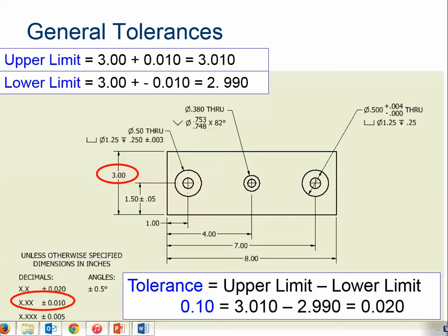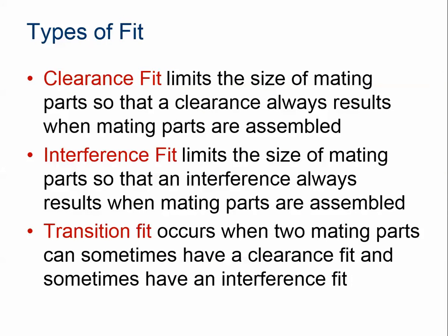Welcome to part two of the video on this tolerance presentation. We are now on the slide we left off on in part one, just about general tolerances and how to interpret what the tolerance would be based on the dimensions that are listed, assuming no specific tolerances, which we've talked about in the first part — we would use decimal places for that. So let's move on to our fit discussion.